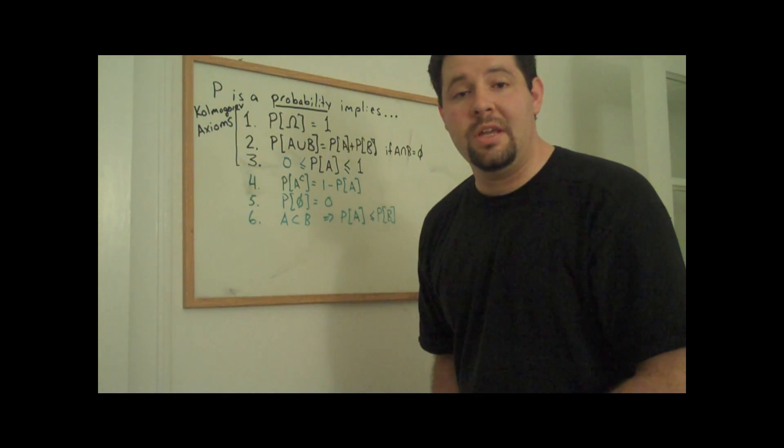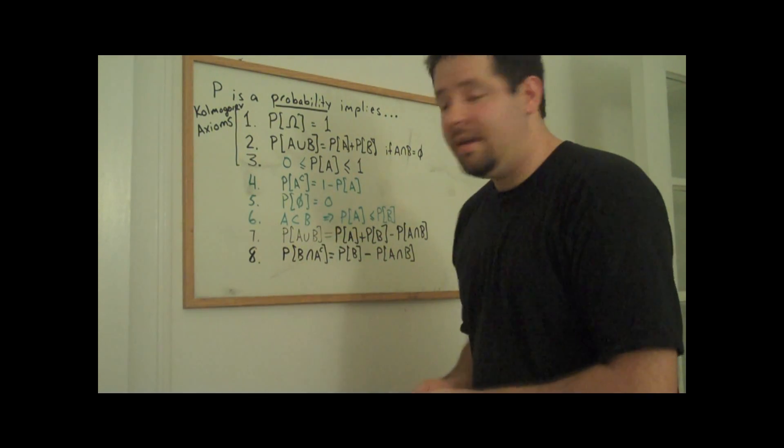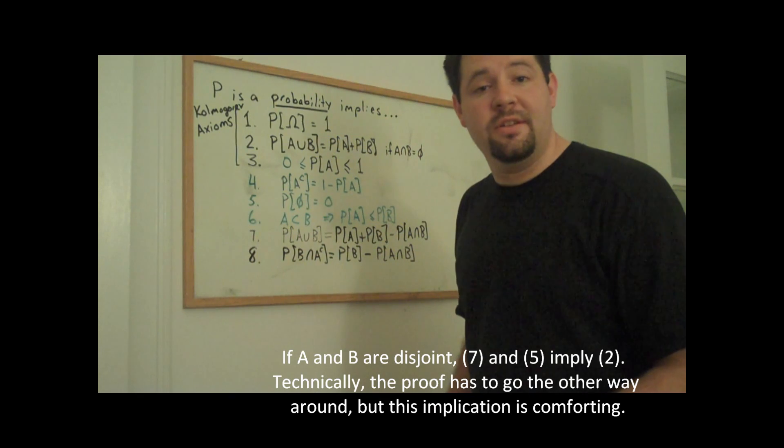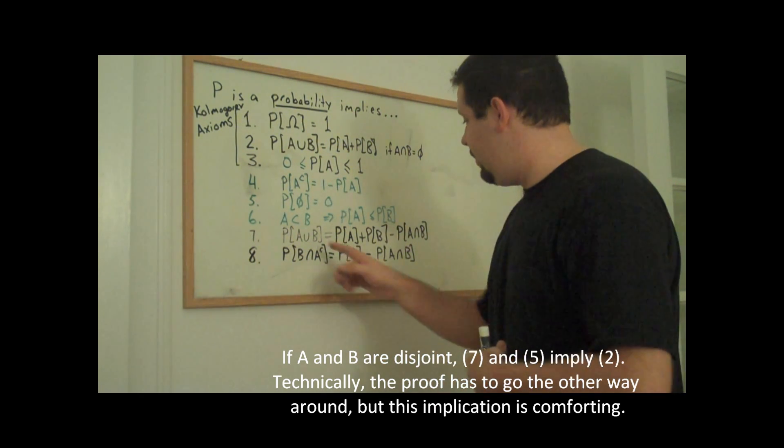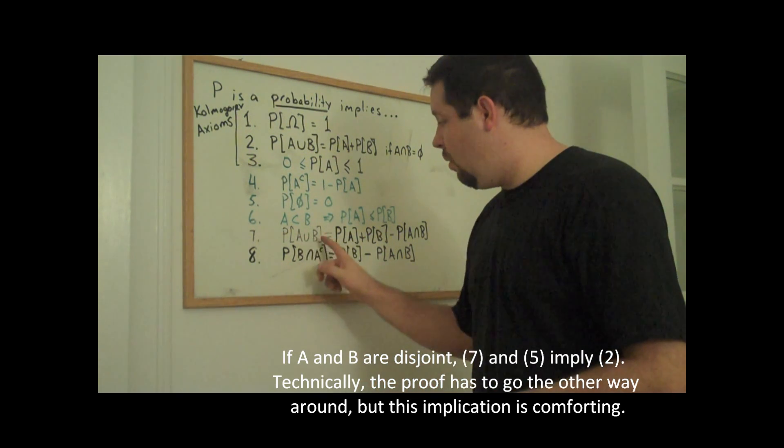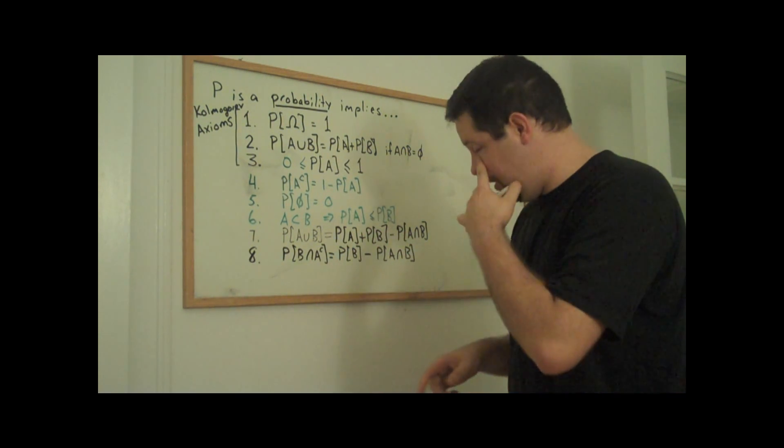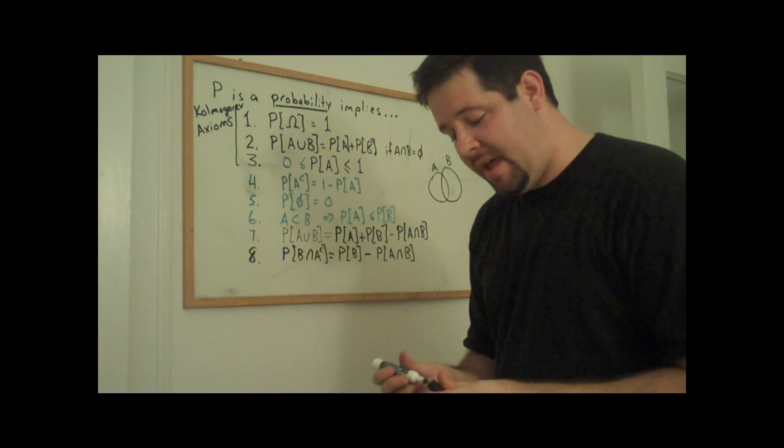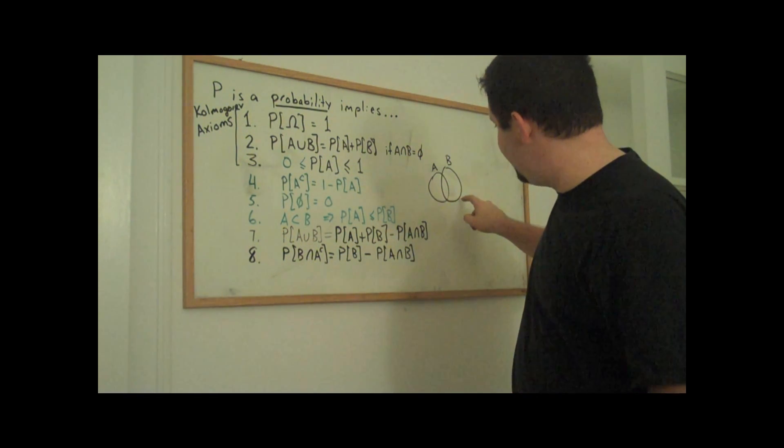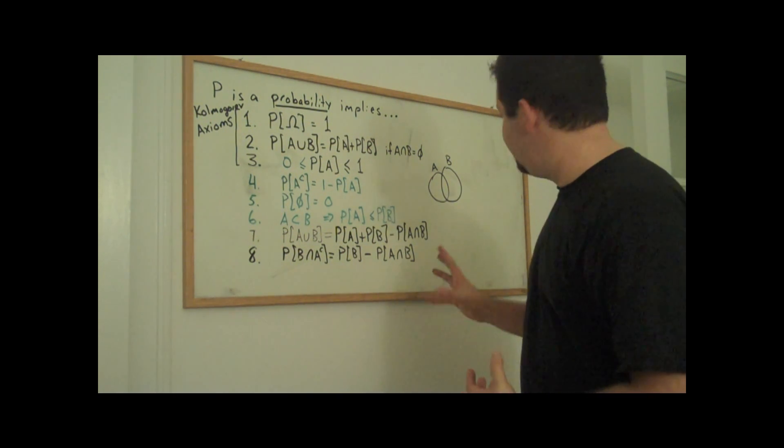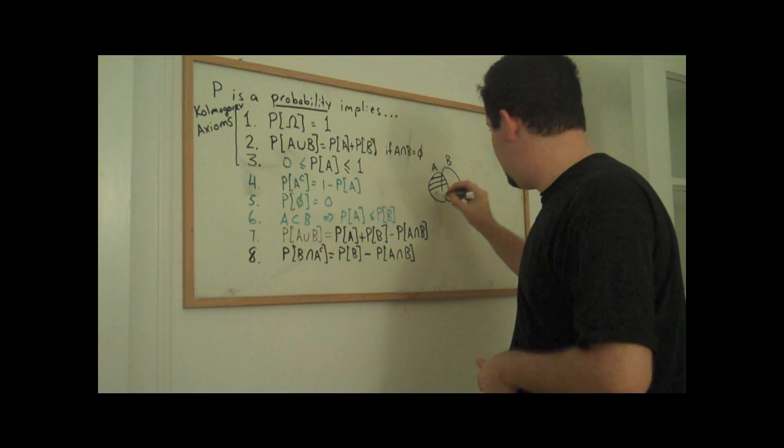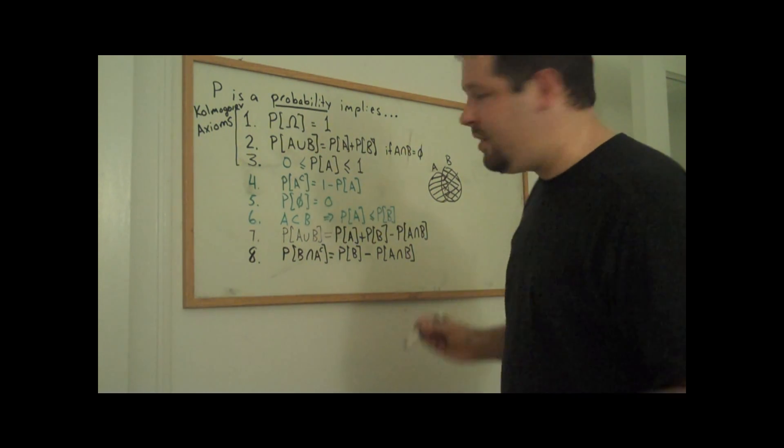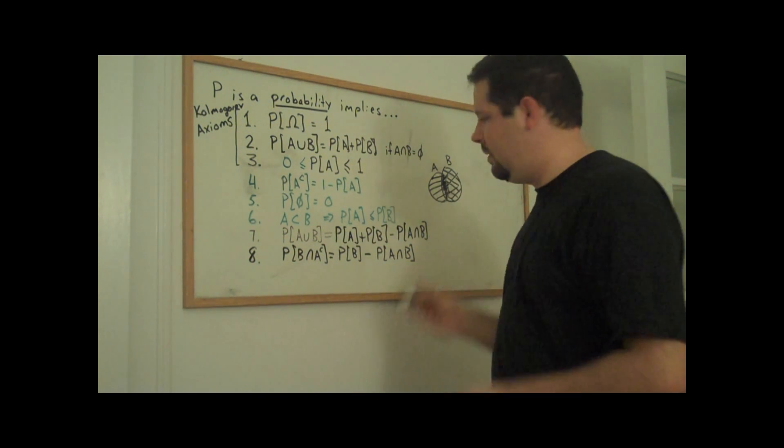In addition to these six conditions that we get here, we can get a couple more. The first result here is that we can get a more general formula here even if A and B share some elements in common in the original sample space. What we can see is that the general formula for A or B happening is the probability of A plus the probability of B minus the probability of A and B. We can see this in a simple Venn diagram. If you want to know the probability of A or B occurring, we want to think about the probability of being the area that is enclosed by these two circles. And what we can see is that if we count A and we count B, we're double counting the area where A and B both occur. So we need to subtract that out.